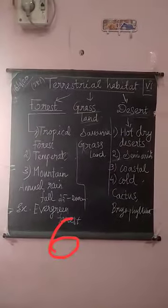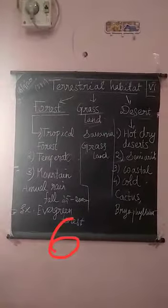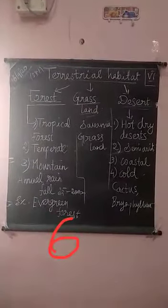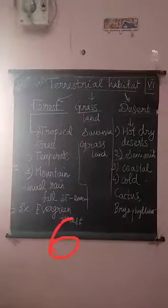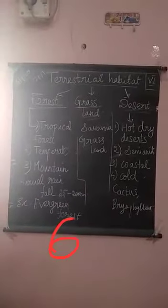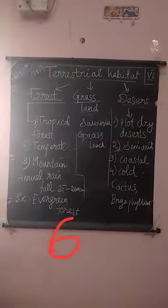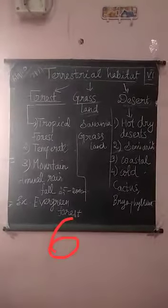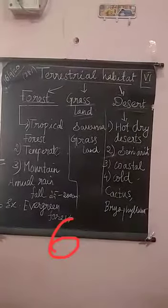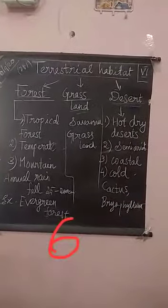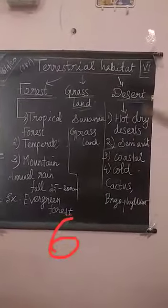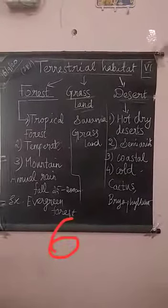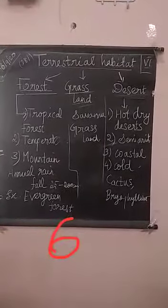The annual rainfall of this forest habitat is 25 to 200 cm. These are the things given in your book about forest habitat. An example of forest habitat is evergreen forest. The second one is grassland — it is an area mainly covered by grasses, and that is said to be grassland habitat.